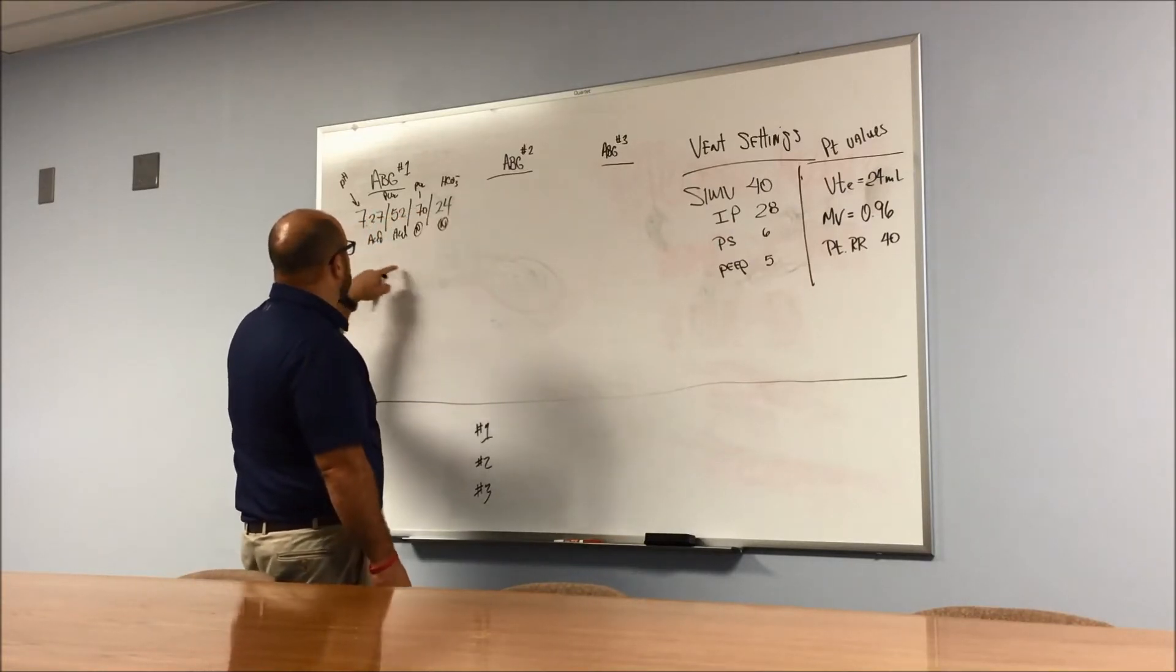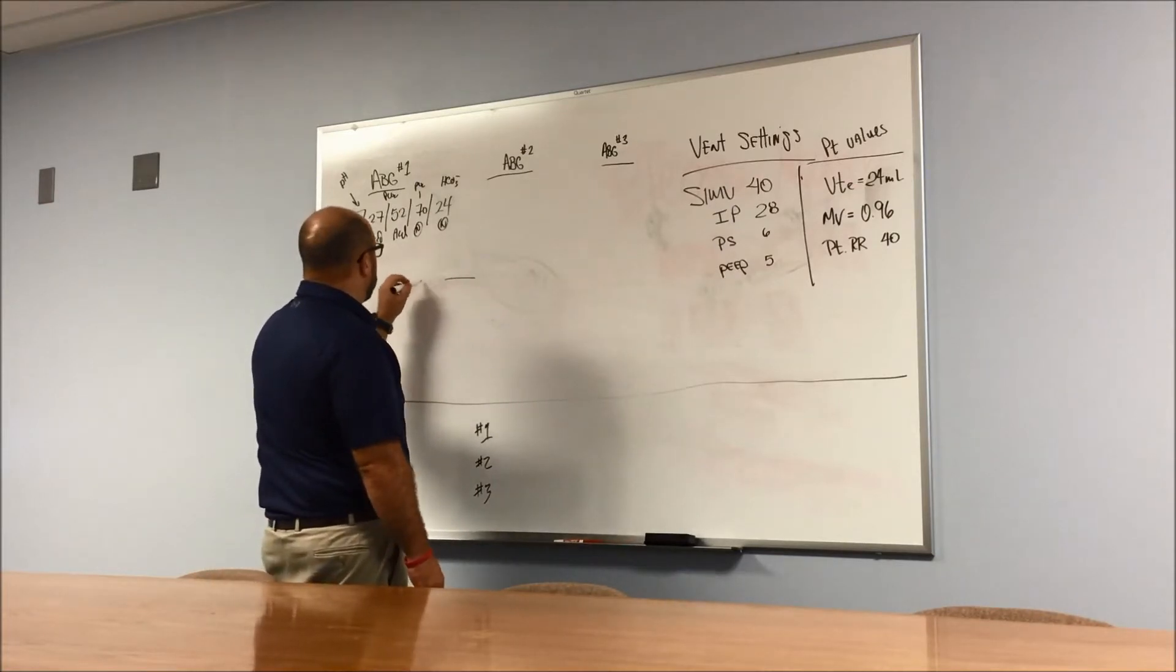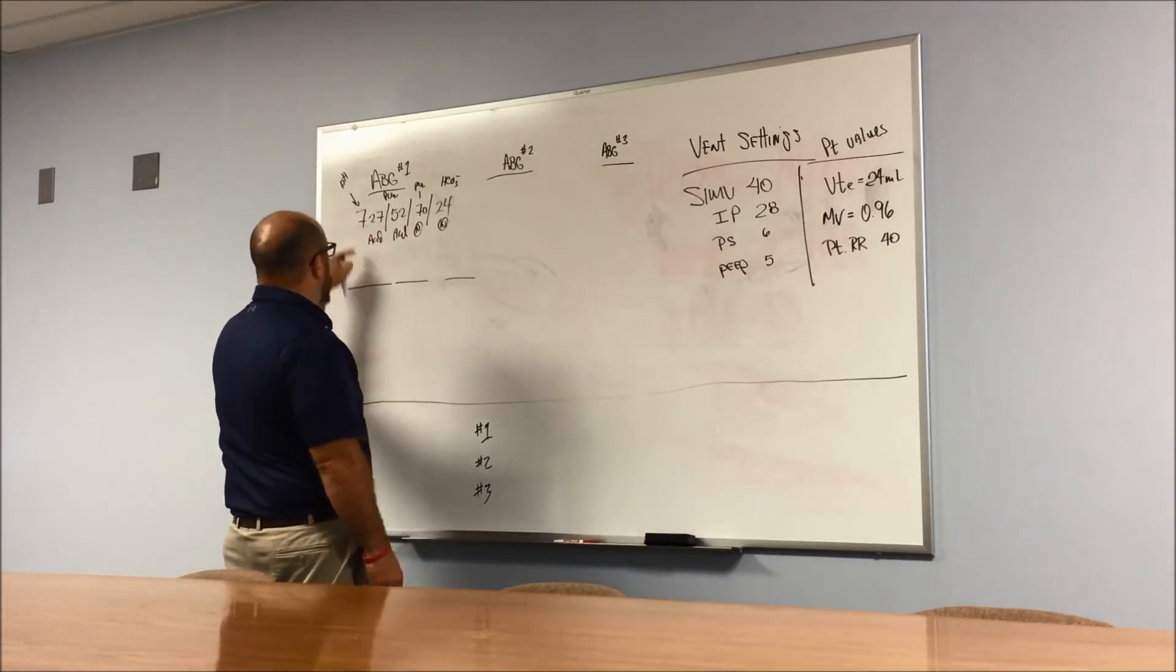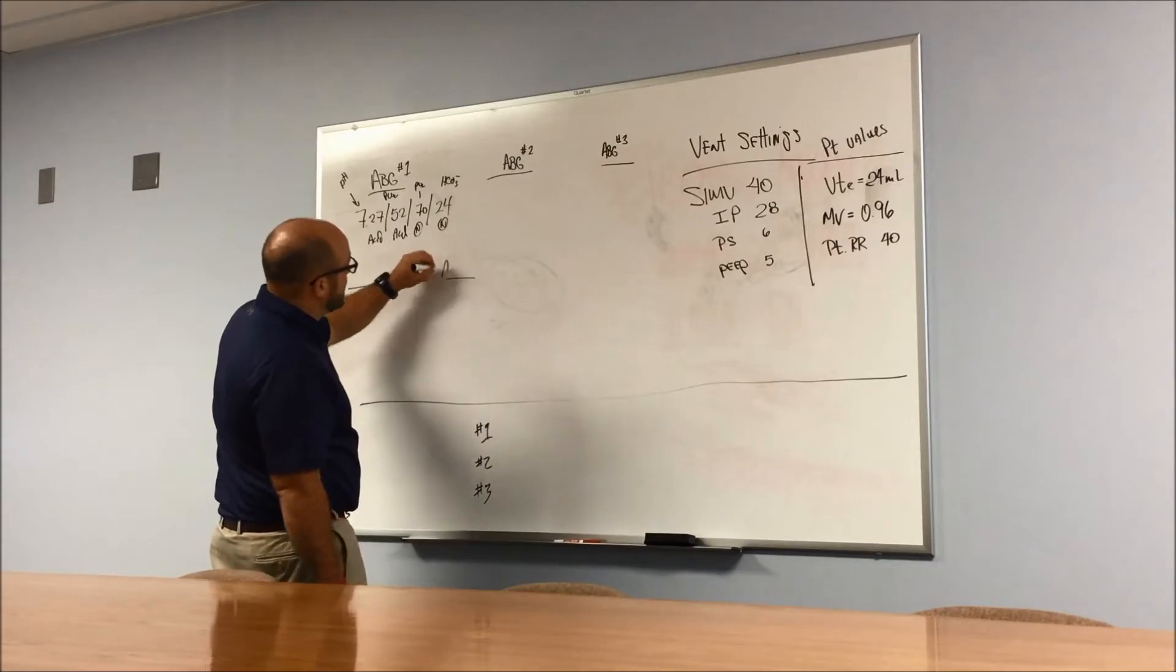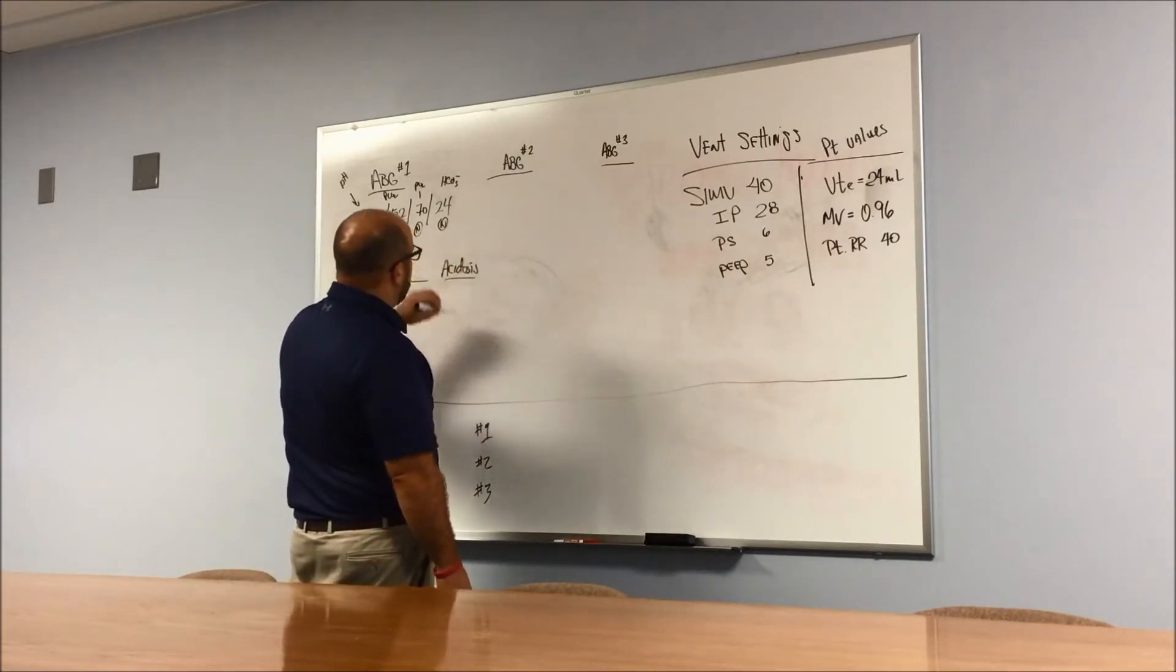So I go through and just call each one of them what they are. This is acid, this is acid, this is we're going to call it normal in this case, and this is normal. So if we're going to name this blood gas, we're going to do it backwards always.